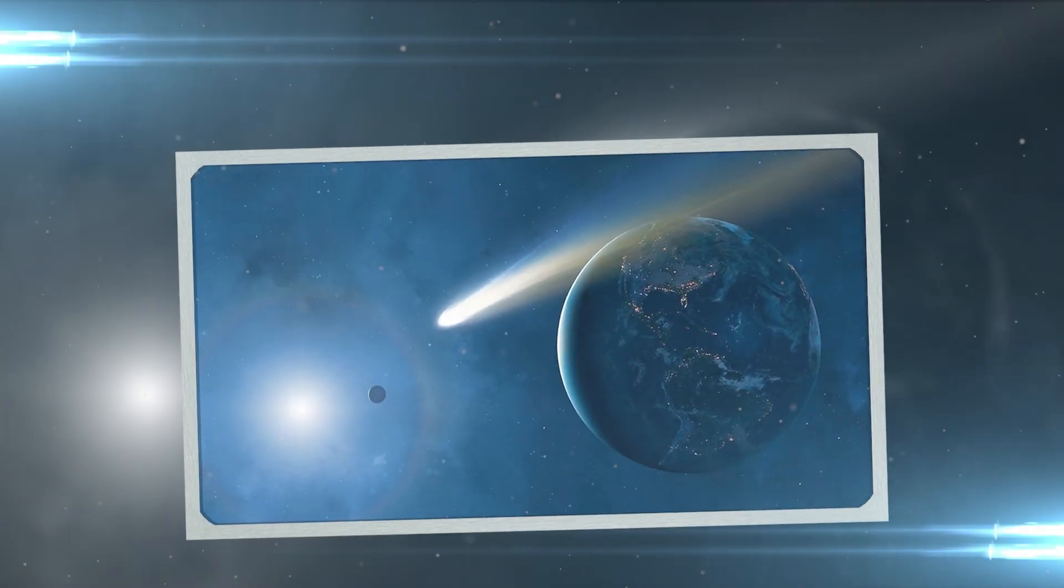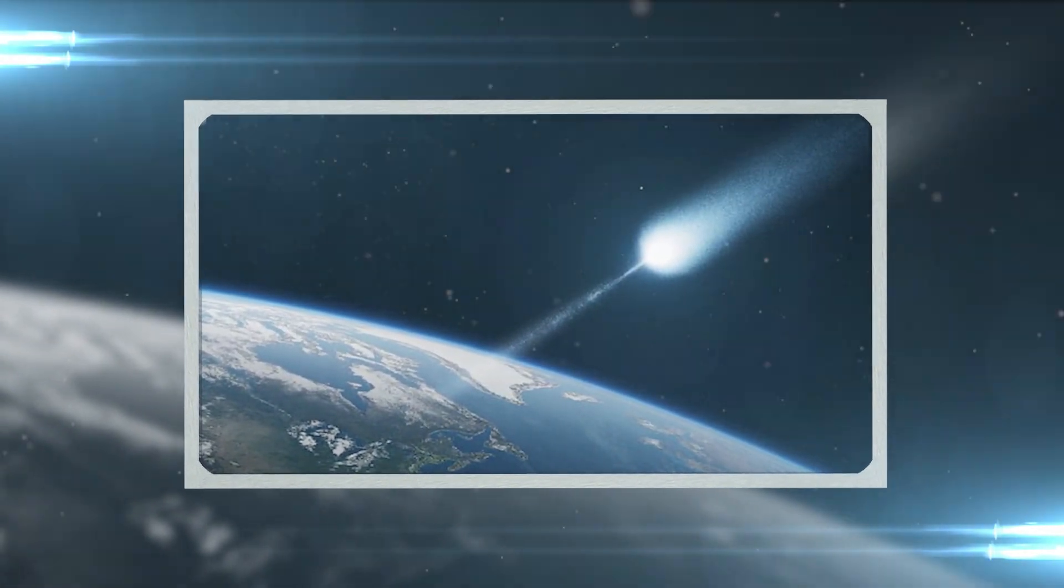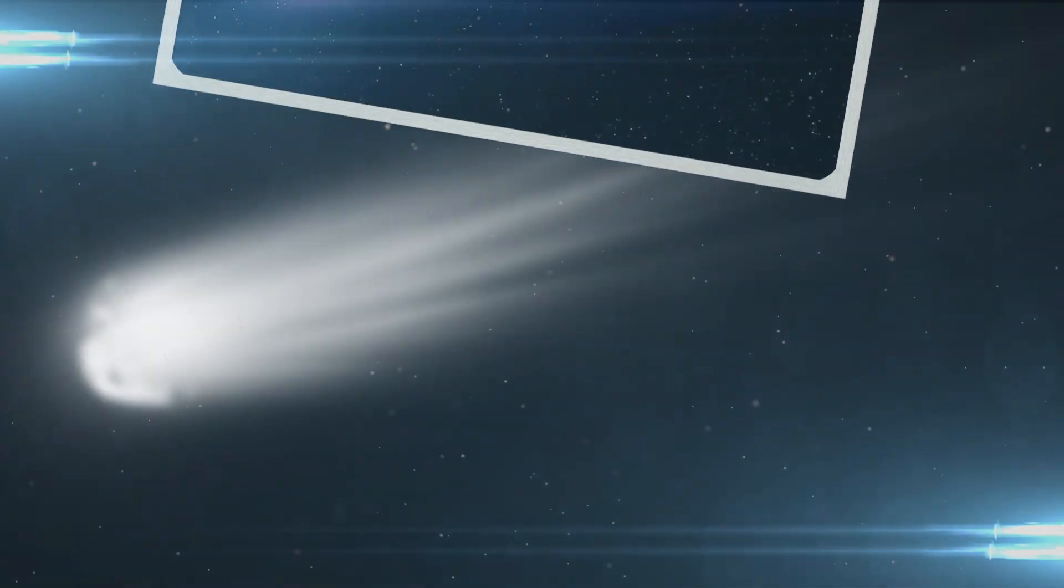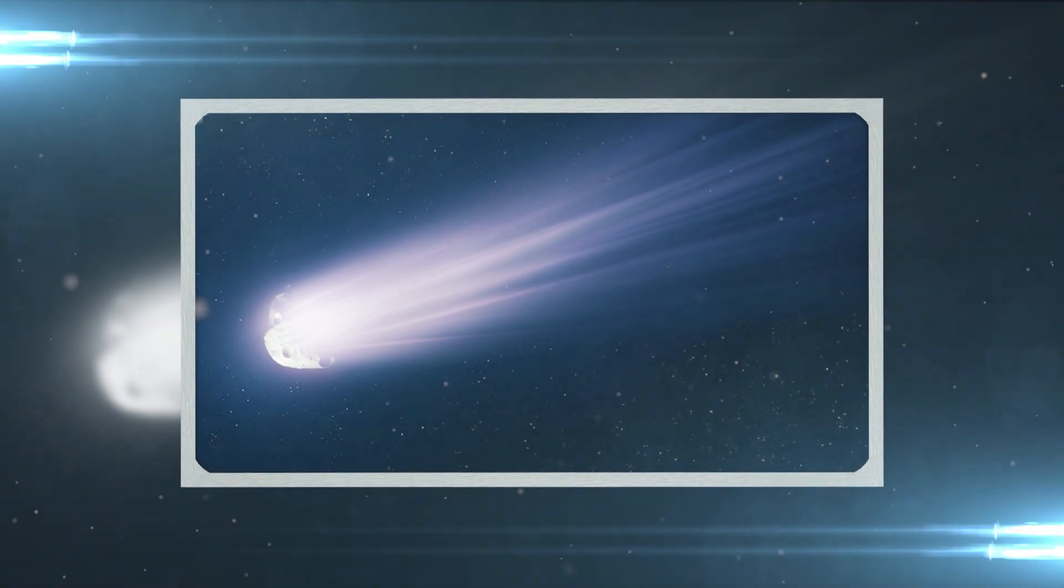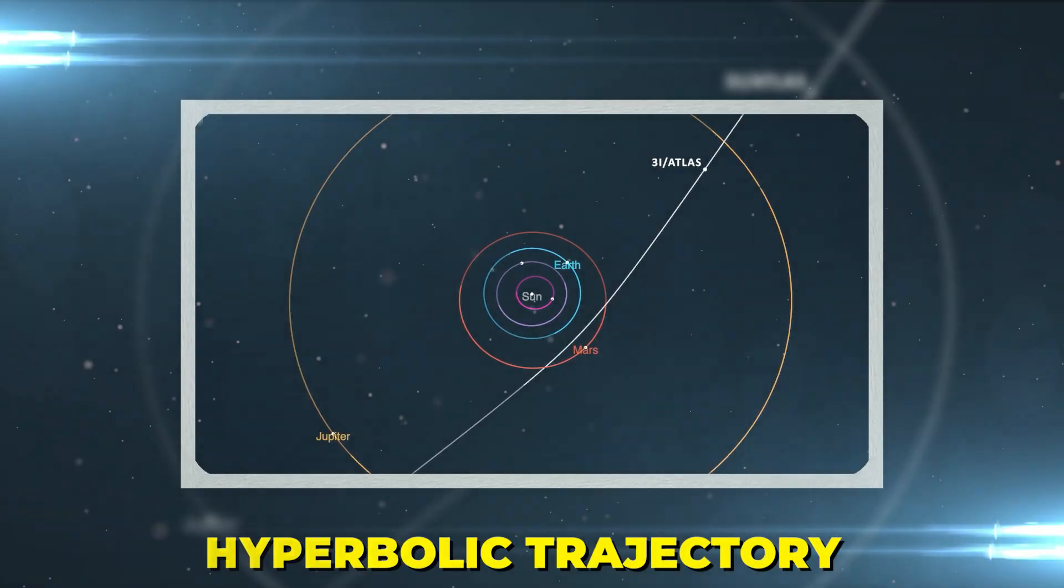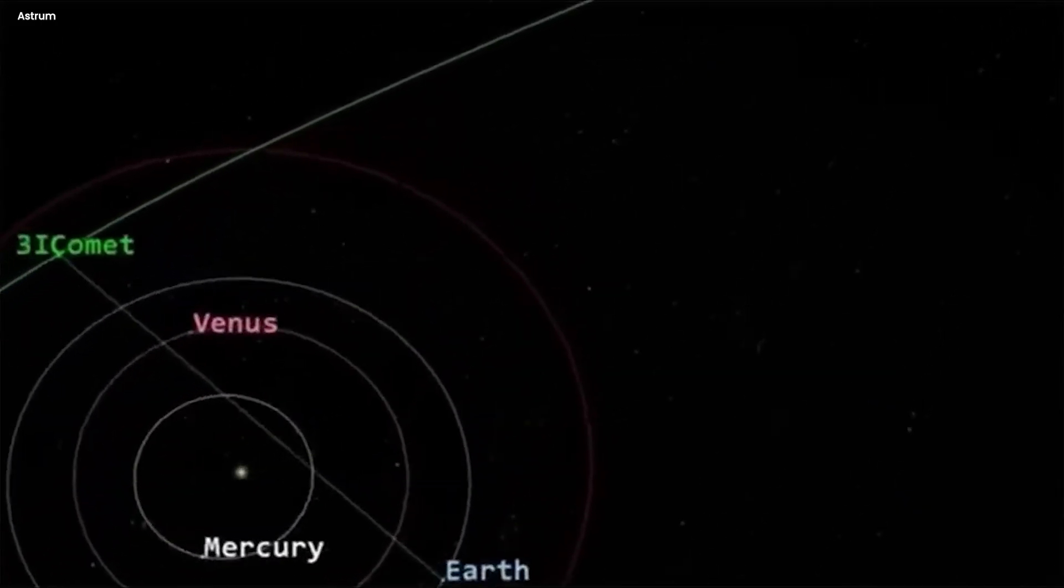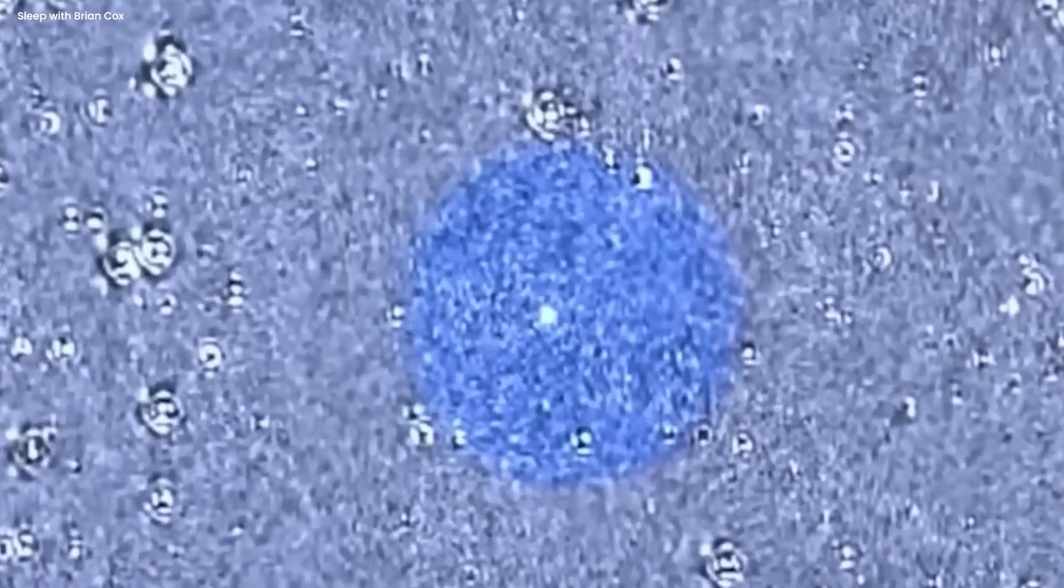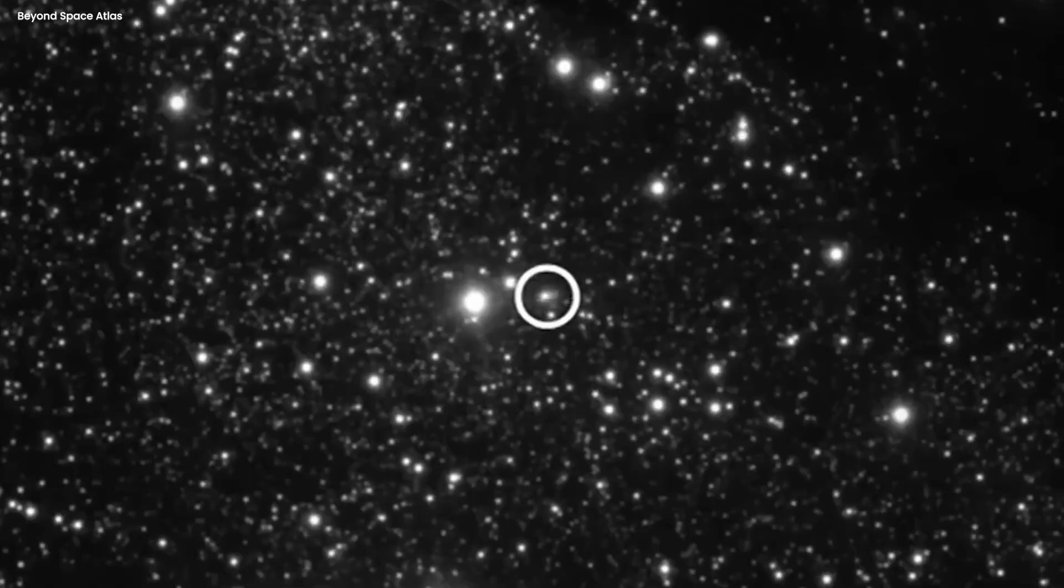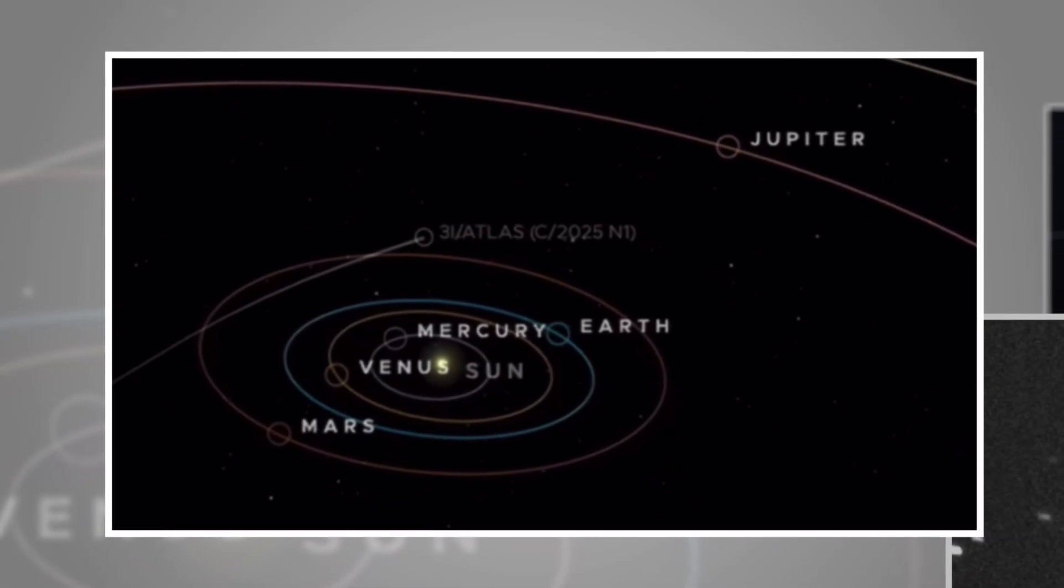Now you might be thinking, well, maybe it was just bad timing. Maybe 3I Atlas wanted to visit Earth, but the orbital mechanics just didn't line up properly. Except that's not how this works. Because 3I Atlas isn't stuck in an orbit around the Sun like the planets are. It's traveling on a hyperbolic trajectory, which means it's moving way too fast for the Sun's gravity to capture it. This object is a one-time visitor. It came in from interstellar space and it's going to leave just as quickly. And because it's not bound by the Sun's gravity, it has complete freedom of movement through the solar system. It goes where it wants to go. And it went to the opposite side of the Sun from Earth. That was a choice.